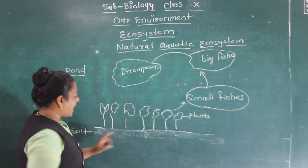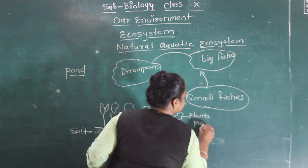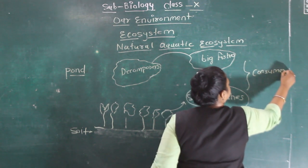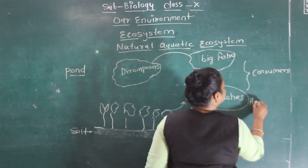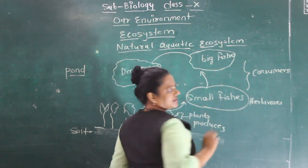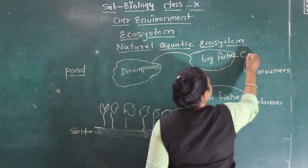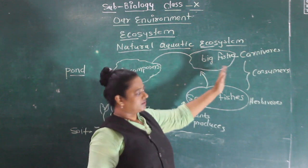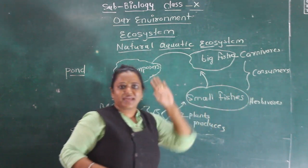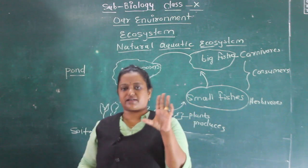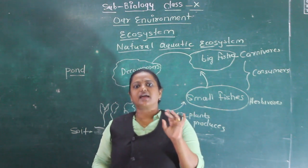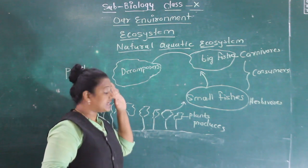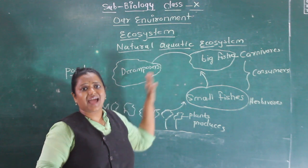Here, plants are called as producers. The small fishes and big fishes are said to be consumers — the small fishes are primary consumers and are herbivores, while the big fishes are secondary consumers and are carnivores. There are three main factors of an ecosystem: first are producers, second are consumers, and third are decomposers. Every ecosystem is completely dependent on these three factors.